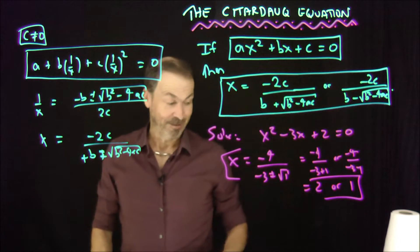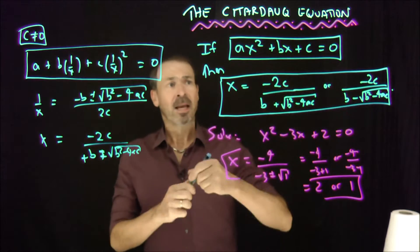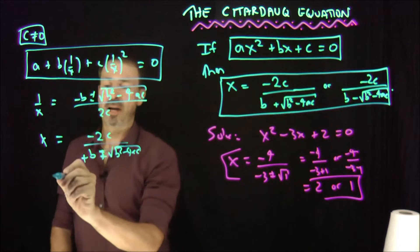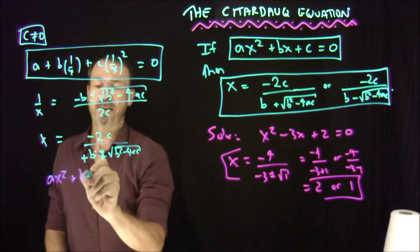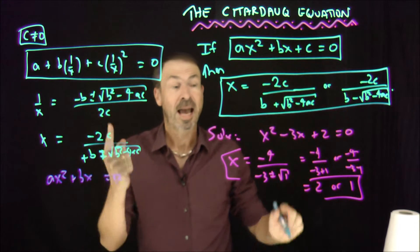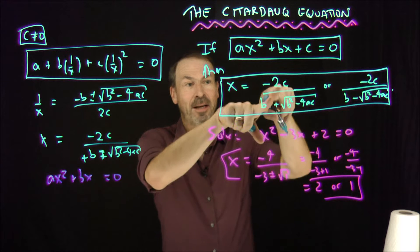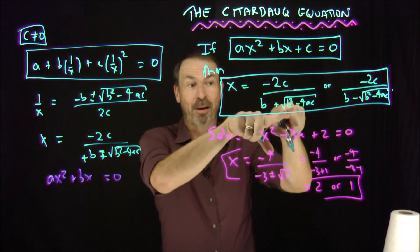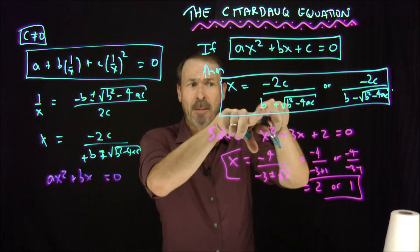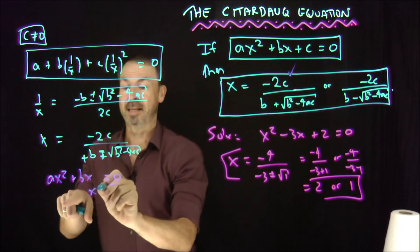All right, so that's the case when c is not zero. Yes, this is in fact just a variation of the quadratic formula. When c is zero, then things are interesting. If c is zero, then I'm dealing with ax² + bx = 0, and I get that x = 0 is indeed a solution. And in fact, look at this. This part here, if c is zero, I get zero on the top and b + b on the bottom, and it gives me zero as a solution.